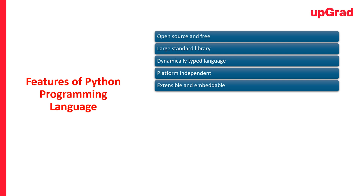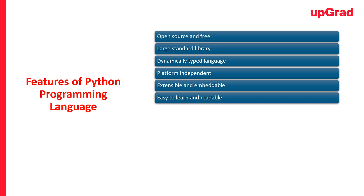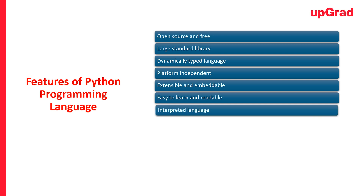At number six, we have easy to learn and readable. Python syntax is renowned for its simplicity and readability. The absence of complex braces in favor of indentation makes Python code easily understandable, making it an excellent choice for beginners and educational institutions. At number seven, we have interpreted language. Python operates as an interpreted language, meaning an interpreter executes the code line by line, improving the development workflow.